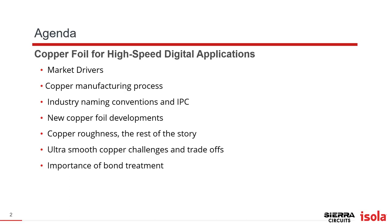One of the problems we run into in the industry is people will ask for the Rz of the material and assume that's going to be adequate for modeling. With regard to modeling and copper roughness of your material, I'd like to go through that in a little more detail. We'll also cover the ultra-smooth copper challenges — obviously there are some trade-offs when you have a smooth foil, since you still have to be able to bond that foil to your dielectric and resin, and we'll talk about the importance of the bond treatment.